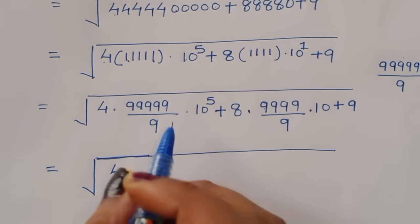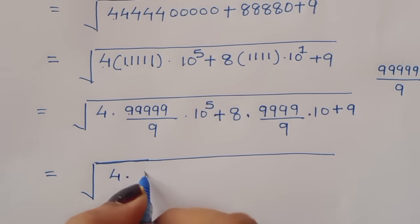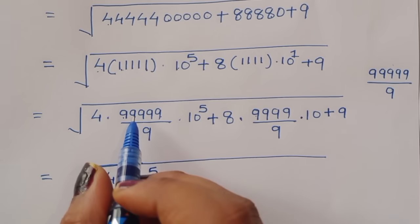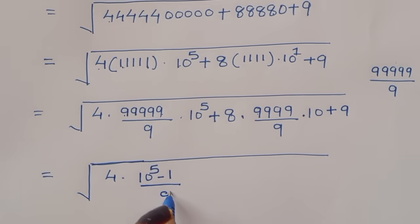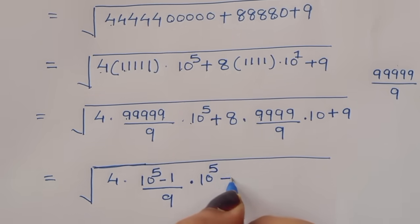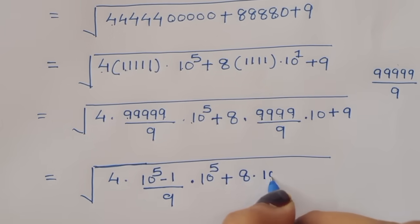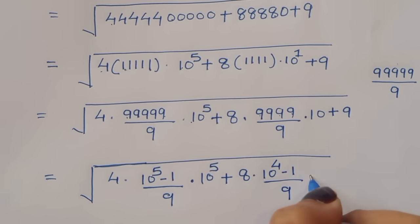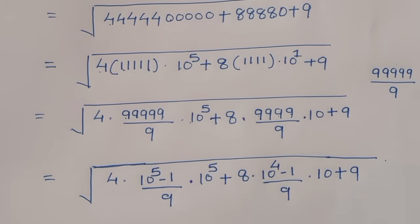Now 5 times 9, so we can write this as 10 raised to 5 minus 1, that is (10 raised to 5 minus 1) divided by 9 into 10 raised to 5, plus 8 into (10 raised to 4 minus 1) divided by 9 into 10 plus 9.